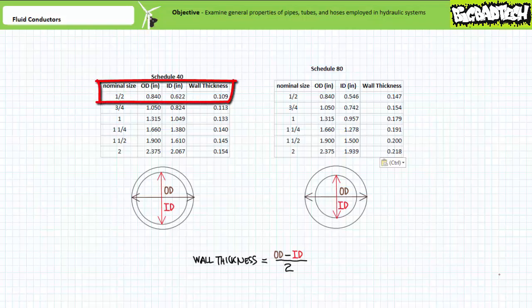For example, a nominal schedule 40, half inch pipe has an OD of 0.84 and an ID of 0.622 inches. This corresponds to a wall thickness of approximately 0.109 inches.